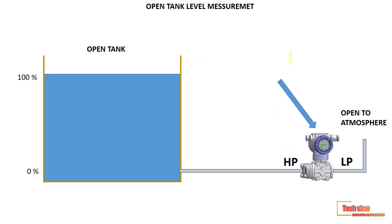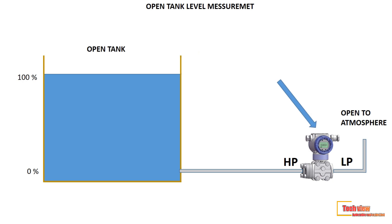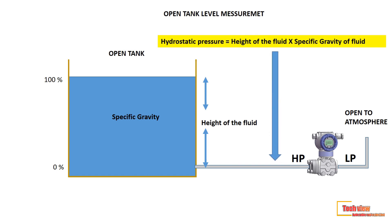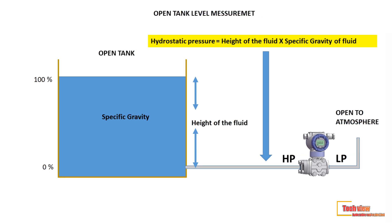For zero level measurement we configure the lower range value (LRV), and for span we configure the upper range value (URV). The hydrostatic pressure acting on the transmitter is commonly calculated as height of fluid times specific gravity of the fluid. Specific gravity is a measure of density relative to a reference substance, which is taken as water. Let's look at how to find the LRV and URV for this transmitter.